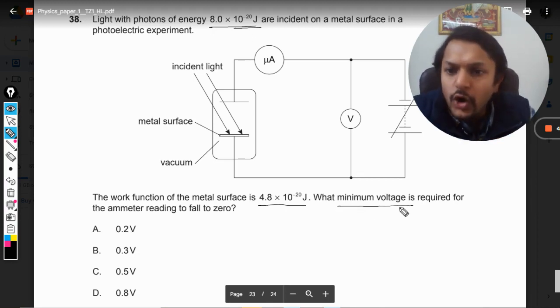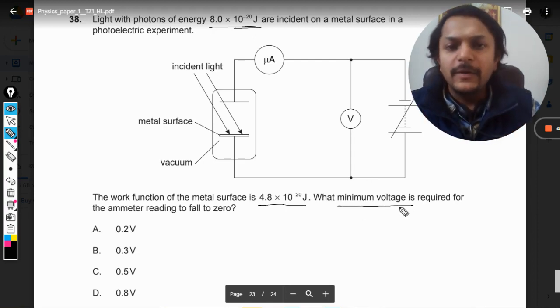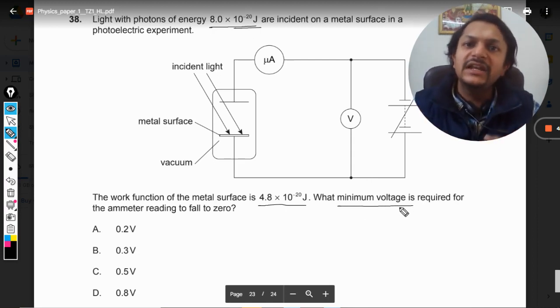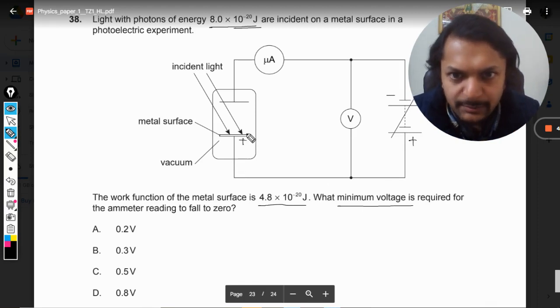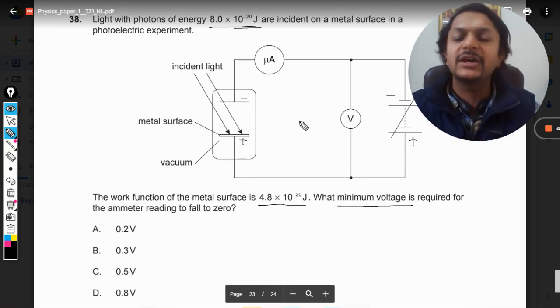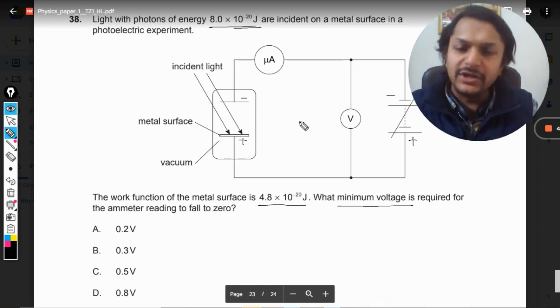So first of all, why will the ammeter reading fall to zero? For example, this is the battery, this is the positive and this is the negative end. So this plate will become positive and this plate will become negative because it is connected to the negative terminal of the battery.